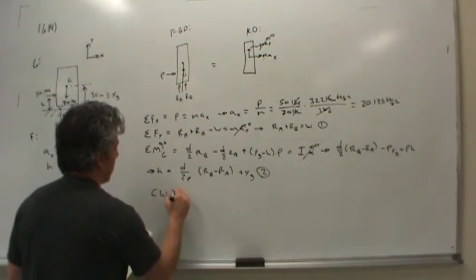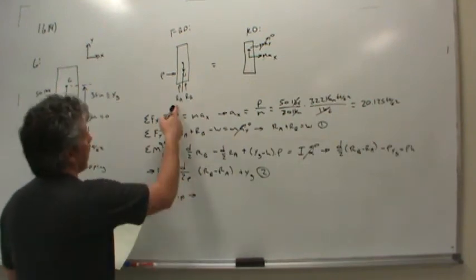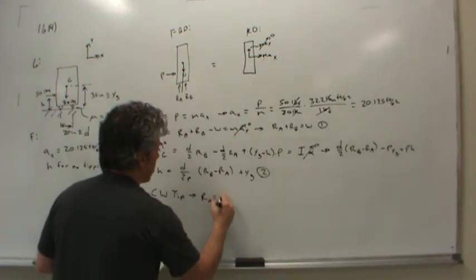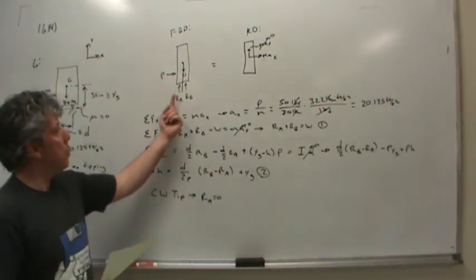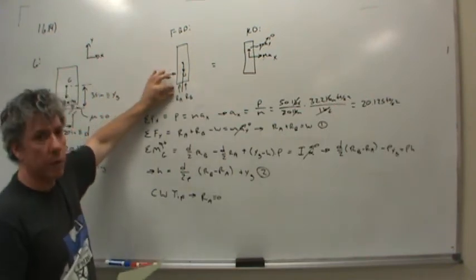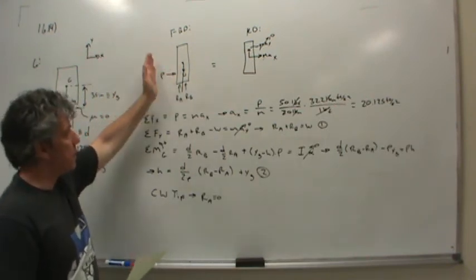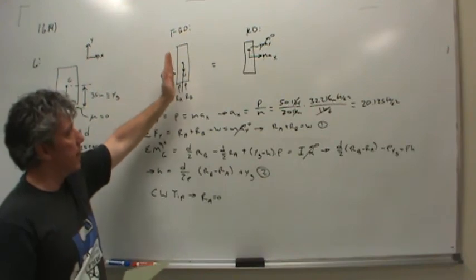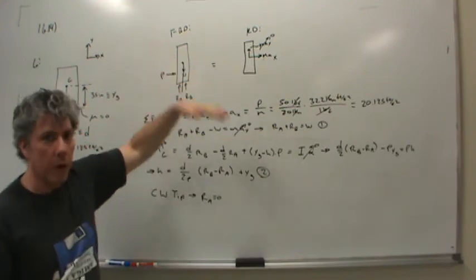Well, clockwise tip implies that ra has gone to zero. There's no more support here. It's about to tip over or lose contact with the floor on the left-hand side.